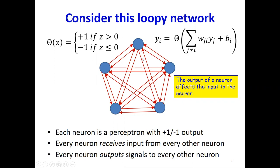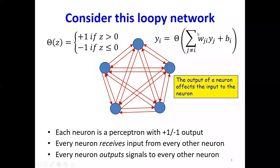These are the kinds of neurons we're going to see. Specifically, we're going to be considering a very particular kind of activation function of the form theta(z), where if the affine combination coming into the neuron is positive, the output is plus one, and if it's negative or zero, the output is minus one. We're using plus one and minus one for output, not zero and one. Every neuron receives input from every other neuron and every neuron outputs signals to every other neuron — you have this cyclic passage of information.